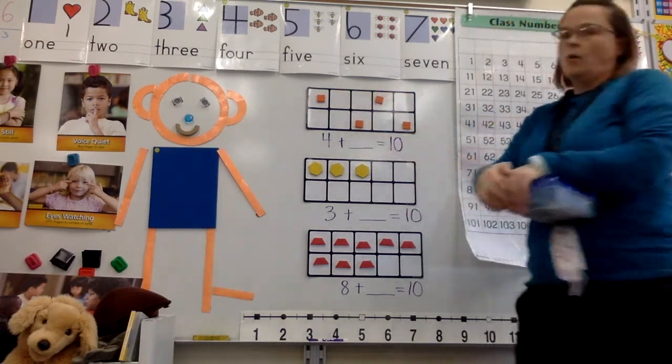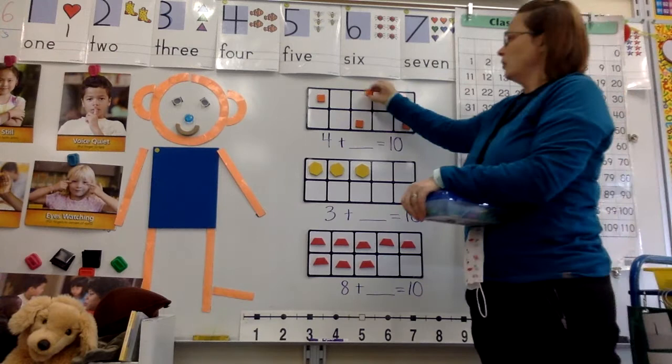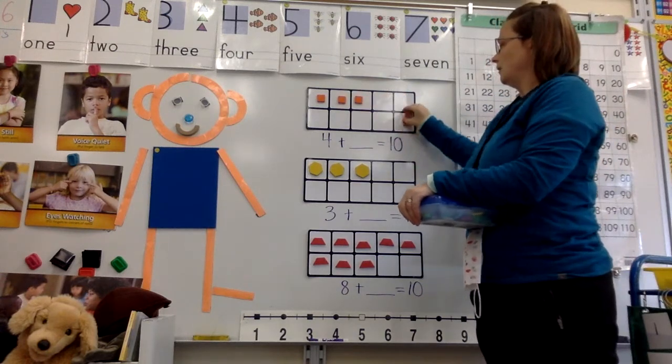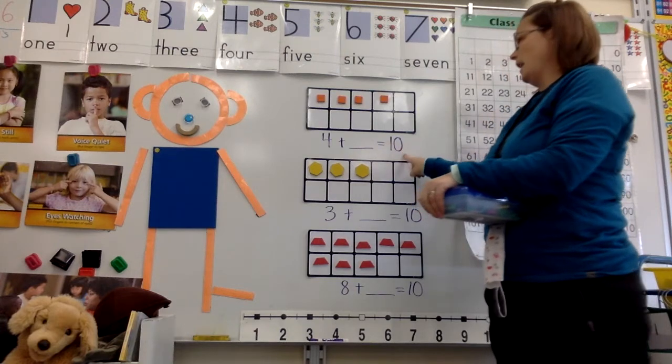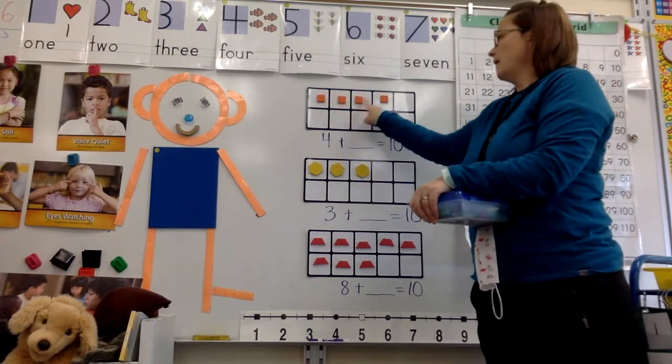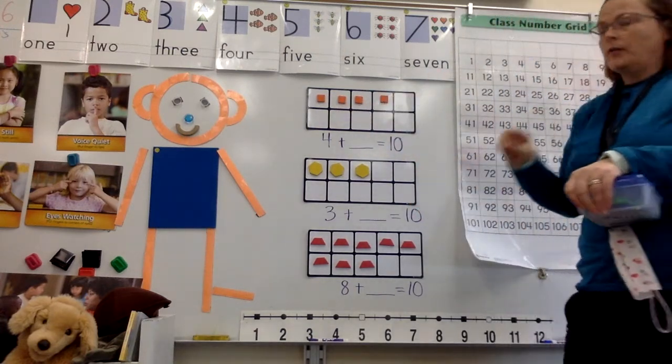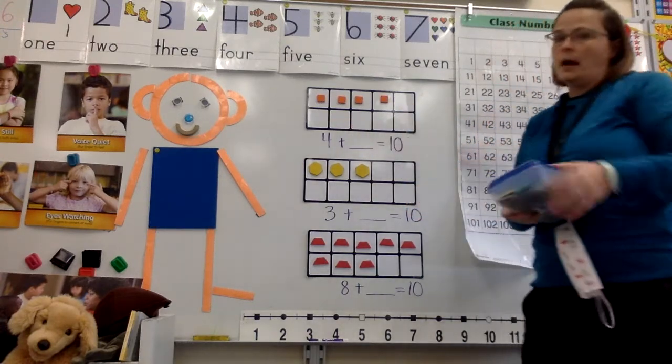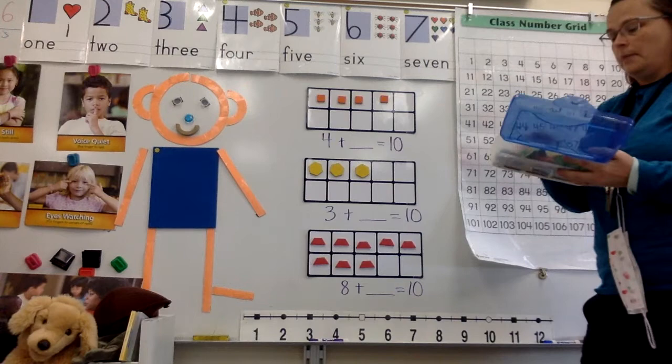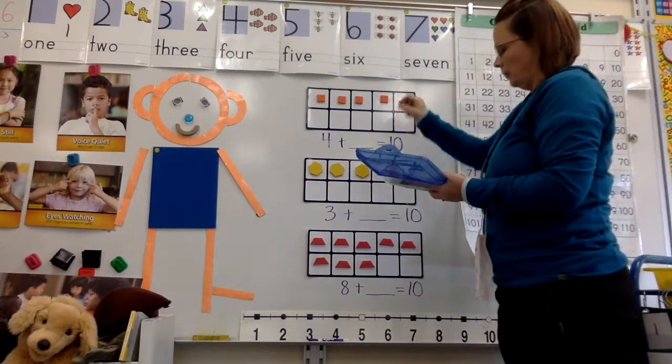I want to make sure my group of four is all together. So four plus something equals ten. So I already have four. To get this answer, I'm gonna need to put a counter in each empty white spot that is left on my ten frame.